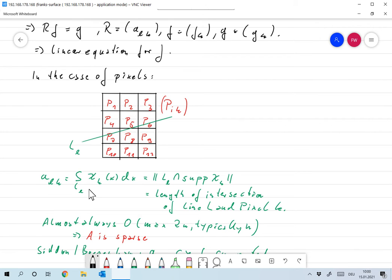So a_lk is the integral over l_lk of x dx, so that's the length of, for example, l_7 would be the length of this segment over here. So it's the length of the intersection of line l and pixel k.